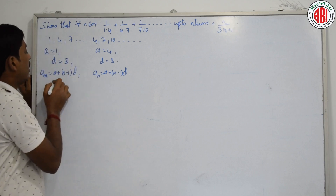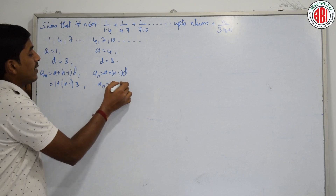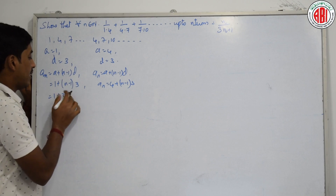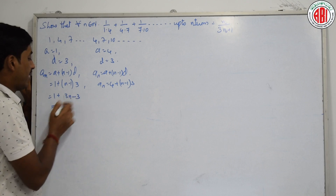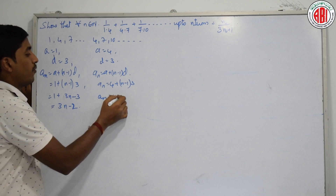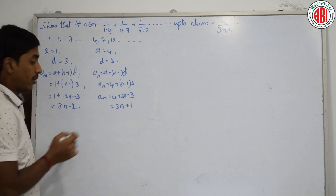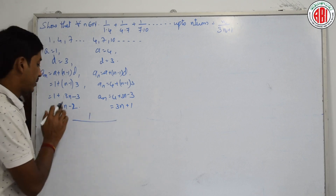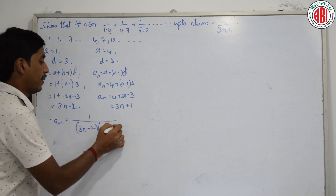For the first AP: 1 plus (n minus 1) into 3 equals 1 plus 3n minus 3, which is 3n minus 2. For the second AP: 4 plus (n minus 1) into 3 equals 4 plus 3n minus 3, which is 3n plus 1. Therefore, the nth term of the series has both in the denominator: (3n minus 2) into (3n plus 1).